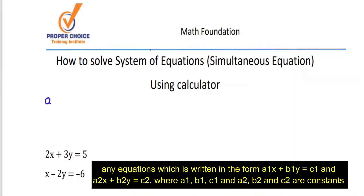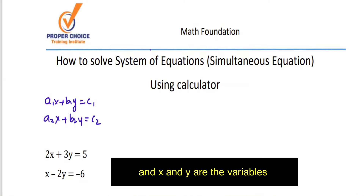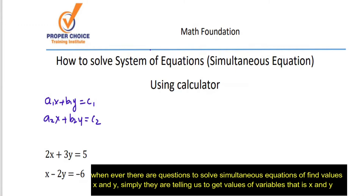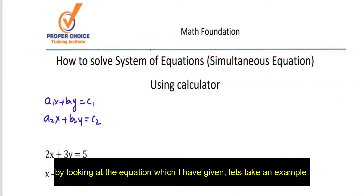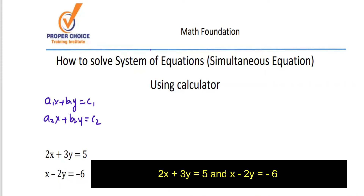Any equation written in the form A1X + B1Y = C1 and A2X + B2Y = C2, where A1, B1, C1 and A2, B2, C2 are the constants and X and Y are the variables. Whenever you get a question to solve simultaneous equations or find the values of X and Y, they are simply asking us to get the values of the variables. Let's take the example: 2X + 3Y = 5 and X − 2Y = −6.